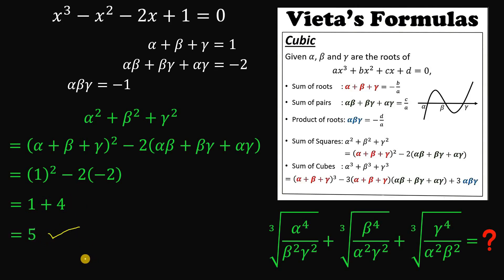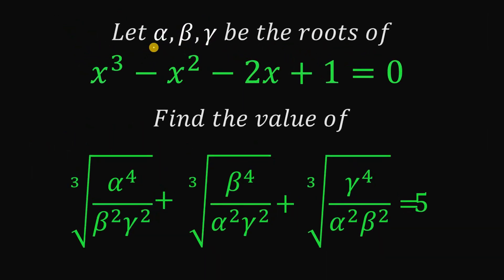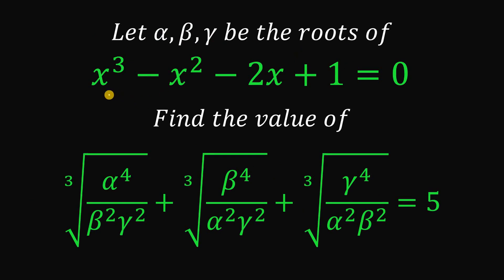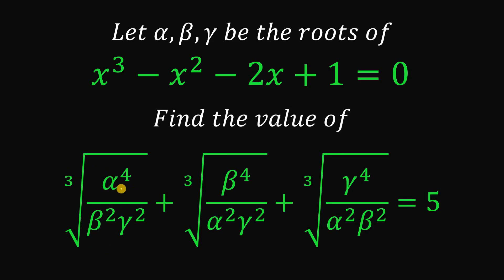Therefore, if alpha, beta, and gamma are the roots of x cubed minus x squared minus 2x plus 1 equals 0, then the value of the cube root of alpha to the fourth over beta squared·gamma squared, plus cube root of beta to the fourth over alpha squared·gamma squared, plus cube root of gamma to the fourth over alpha squared·beta squared is simply 5. And as always, we are done.